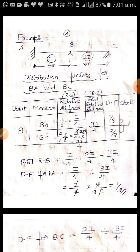Now let's see an example for distribution factor. A continuous beam ABC over support B: end A is fixed and end C is hinged. For member AB, I = I and span = 4 m. For member BC, I = 2I and span = 3 m. We calculate distribution factors for members BA and BC at the intermediate joint B.